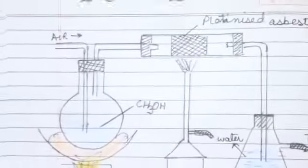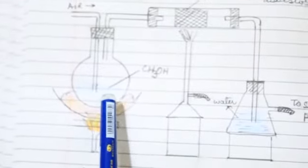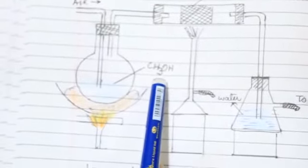Now, come to lab method. This is the lab method of formaldehyde. In this, we just give heat to methyl alcohol.